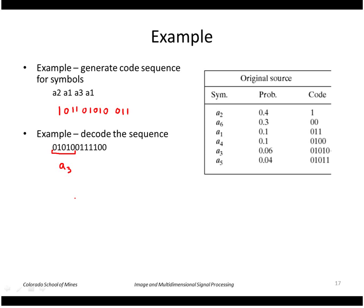Next we have 0 1 1 which is a1, we have a single 1 which is a2, another single 1 is a2, and then 0 0 which is an a6. So it's unambiguous if you decode your bit string like this.